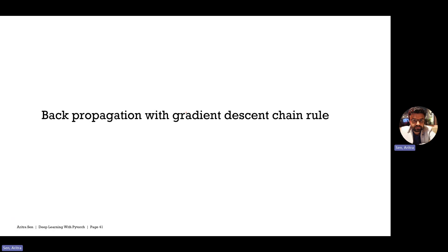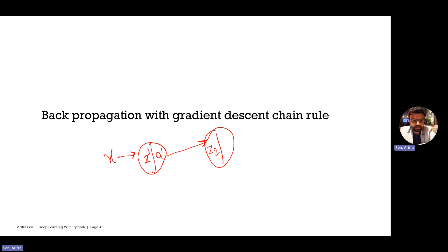Based on the given input — denoting the whole input as X — we pass that input to a set of hidden layers. In the first hidden layer we do a set of operations: linear operation Z and activation A, so Z1 and A1. Then we pass it through the output layer where we do Z2 and A2, and we get the final output which is A or Y-hat.